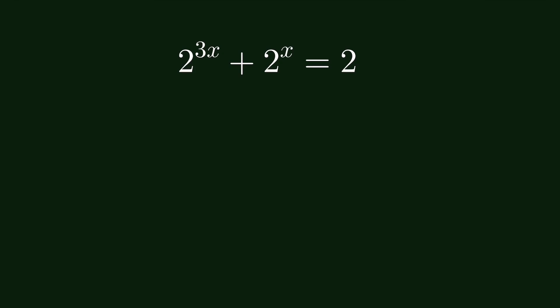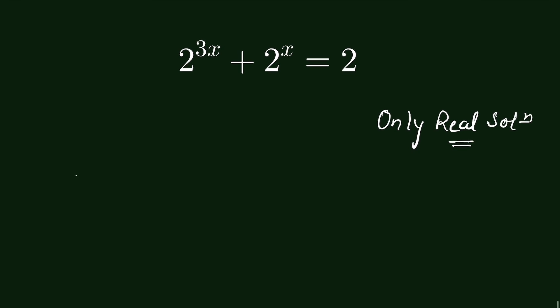2 to the power 3x plus 2 to the power x is equal to 2. We have to find the solution for x, and remember that only real solutions we have to find — this makes it somewhat easy. Now, 2 to the power 3x we can also write as 2 to the power 3 times x.